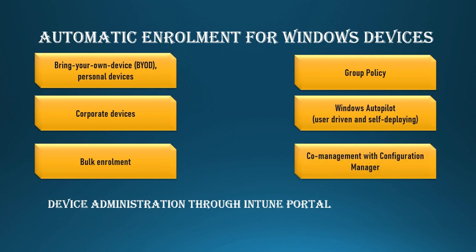Another method is co-management, which involves SCCM — System Center Configuration Manager. Co-management with Configuration Manager means you can use SCCM and Intune together for on-premise and cloud management. SCCM updates have been slow, but as technology grows, Intune and co-management with Configuration Manager is the direction.